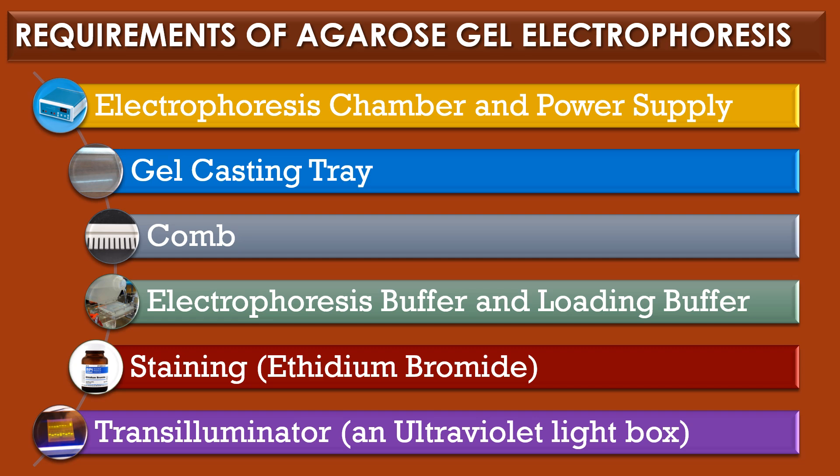Next, staining. DNA molecules are easily visualized under a UV lamp when they are electrophoresed in the presence of ethidium bromide. Alternatively, nucleic acids can be stained after electrophoretic separation by soaking the gel in a solution of ethidium bromide. The final requirement is a transilluminator, which is a UV light box used to visualize the stained DNA in gels.